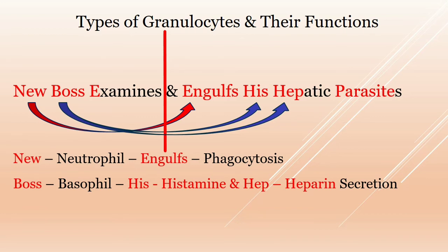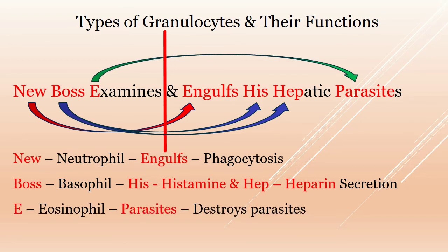The word 'H' here stands for histamine, and 'hep' stands for heparin — it also secretes heparin. Lastly, 'E' stands for eosinophil, so its function is to destroy parasites.